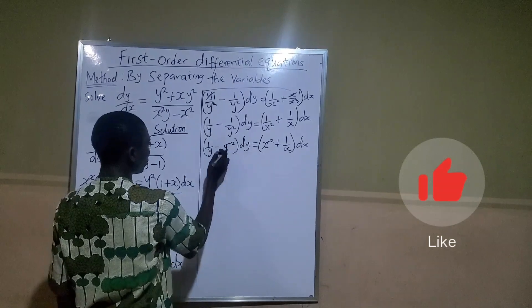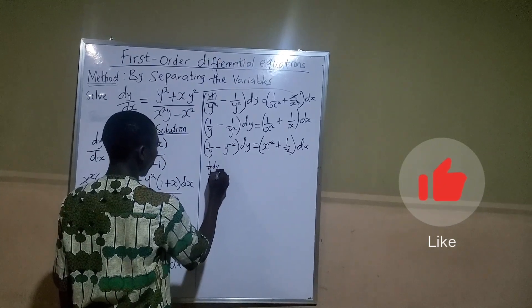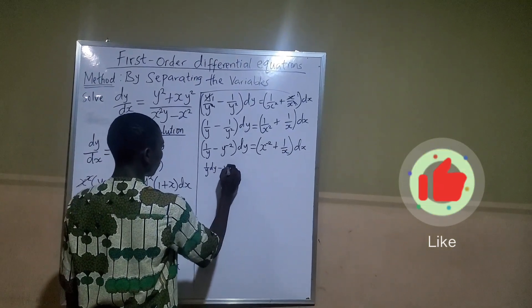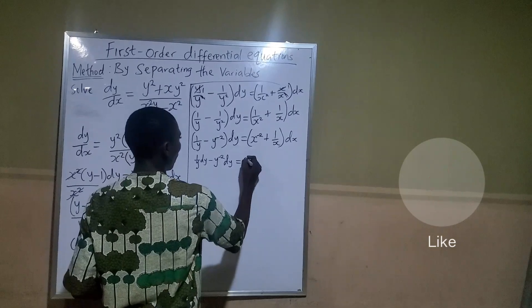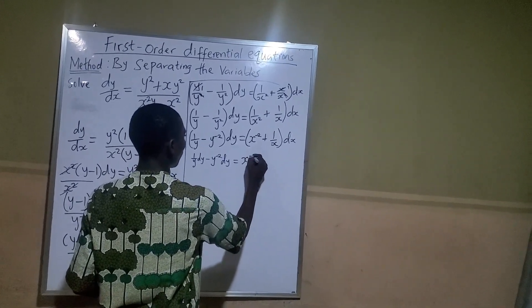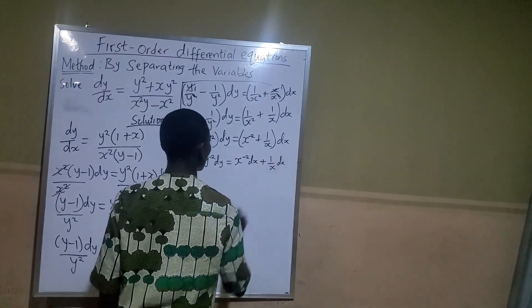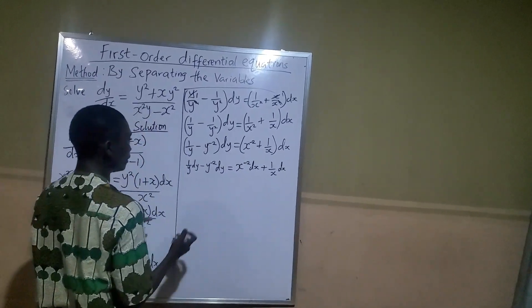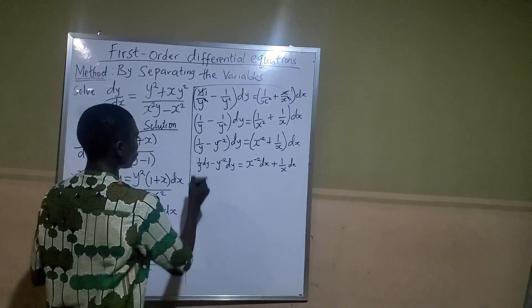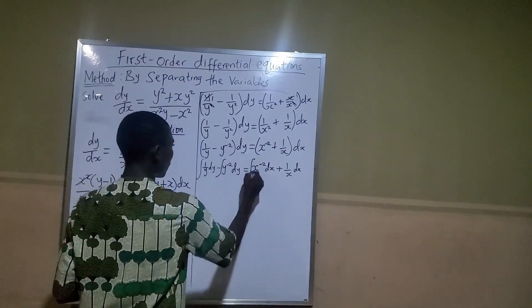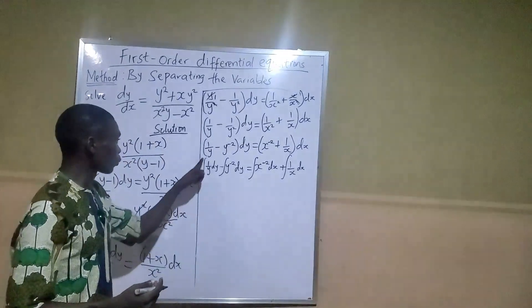Now I will use dy to open the brackets: one over y dy minus y raised to the power of minus two dy equals x raised to the power of minus two dx plus one over x dx. Now I need to integrate all of them — integrate this, integrate this, integrate this, and integrate this.